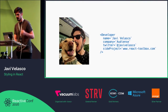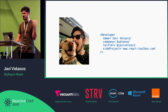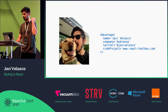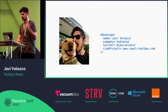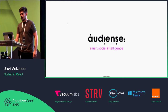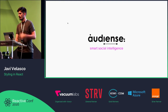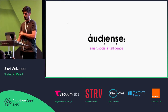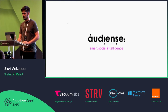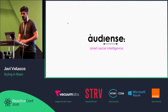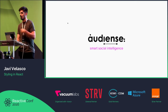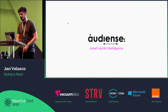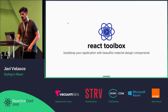I'm Javi Velasco. That's my dog, that's me, that's my name. I'm on Twitter in case you want to reach me. I work for a company called Audience — we are doing a lot of great stuff with the Twitter API, so if you want to know more about your audience, you should definitely check it out.